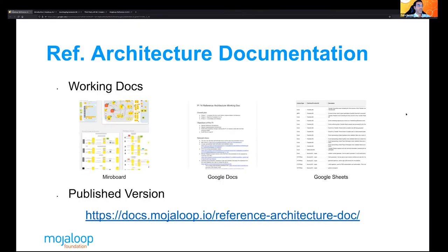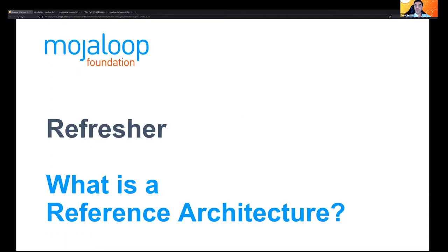One important thing to mention about the reference architecture documentation is that this is a living document — not something created in an ivory tower that will be static forever. The point of having a reference architecture is to make it a living document. We're going to go through a few slides explaining what exactly a reference architecture is, its fundamentals, and why we need one.